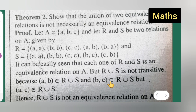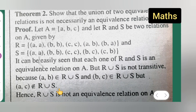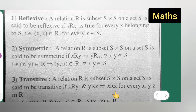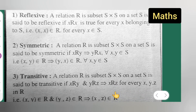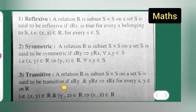Here, (a,c) is not belonging to R∪S — that's why it is not an equivalence relation. It should satisfy all conditions for an equivalence relation: it should be reflexive, symmetric, and transitive.